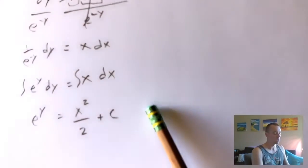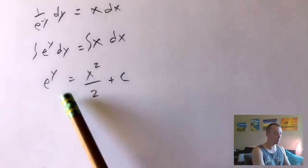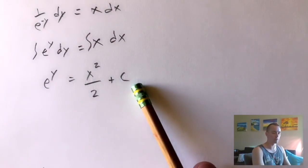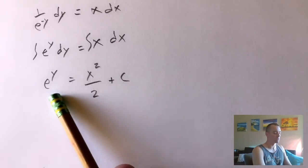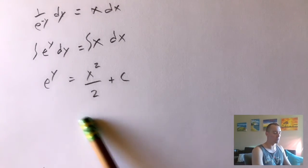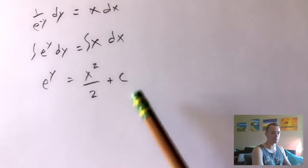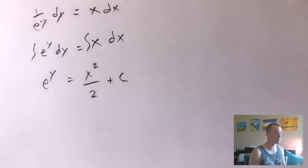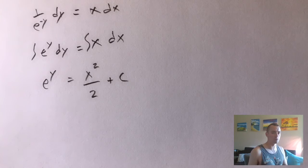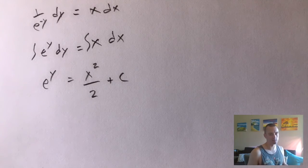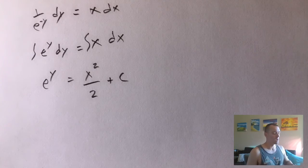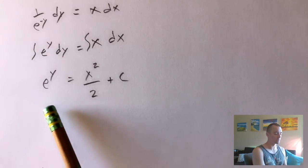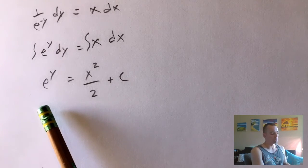Since we want to solve for y, we just move that constant of integration to the right side. Combining an unknown constant with another unknown constant just gives us some new unknown constant, so we can call that c and skip the step of putting plus c on both sides. Now we want to get y all by itself, but the question is: how do we isolate y if it's stuck up in the exponent?